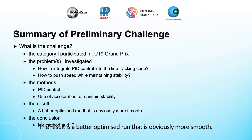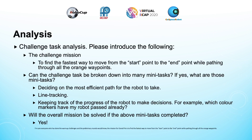The result is a better optimized run that is obviously more smooth. I'm sure everyone who has done warm-up challenges and the preliminary rounds would know. The mission for Grand Prix is to find the fastest way to move from the start point to the end point, while passing through all the orange waypoints. The challenge task can essentially be broken down into three mini-tasks, and the overall mission will be solved when these three tasks are put together.